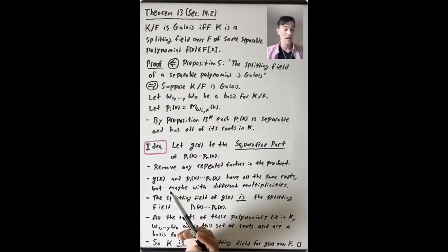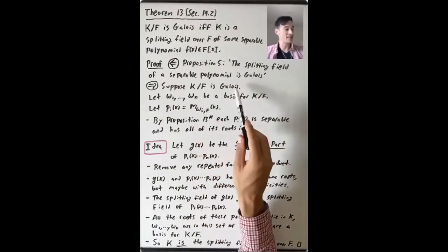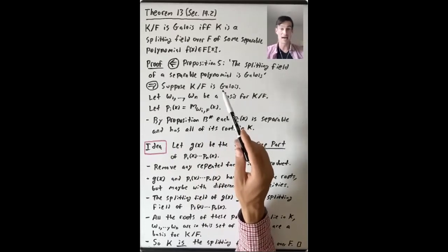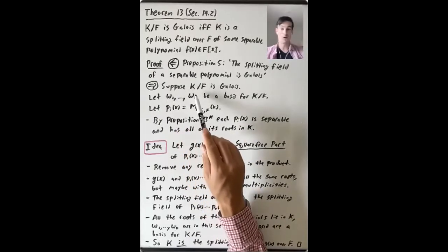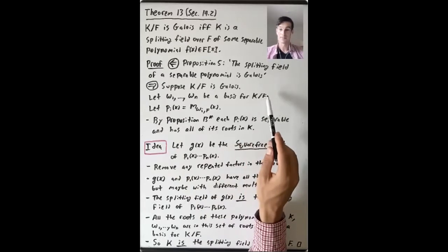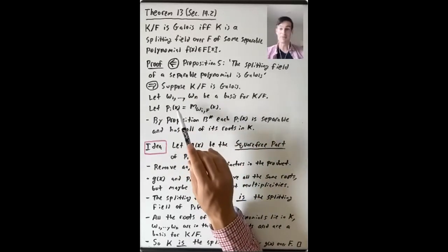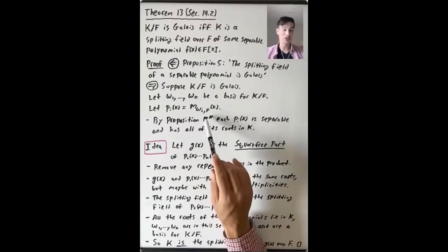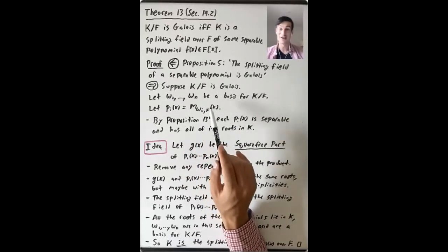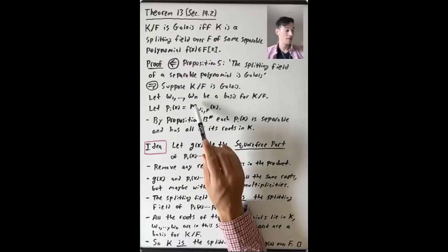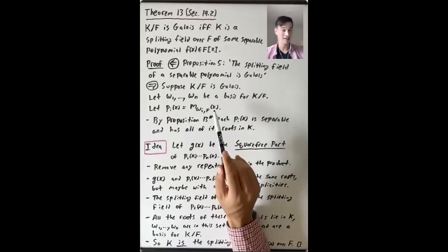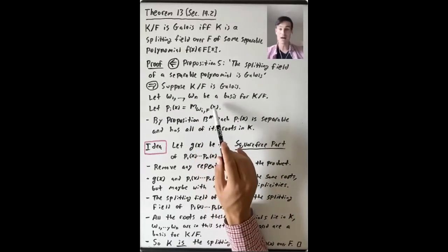Since Galois extensions are finite, suppose K over F is Galois. K is a finite extension, so it is generated over F by finitely many algebraic elements — let's say ω₁ through ωₙ form a basis for K over F. For each ωᵢ, let pᵢ(x) be its minimal polynomial over F. By Proposition 13 Star, each pᵢ(x) is irreducible in F[x], and since ωᵢ is a root in K and K over F is Galois, each pᵢ(x) is separable and has all of its roots in K.